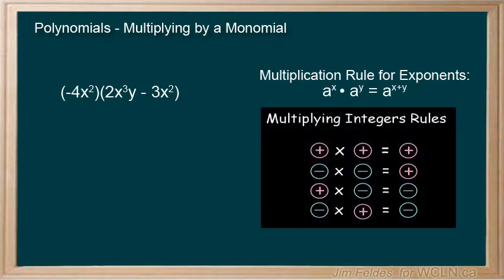For this example we multiply the coefficients with opposite signs and we get negative 8. And add the powers of the x's to get x to the fifth. The y remains unchanged. And negative 4 times negative 3 is positive 12. And the x squared times x squared is x to the fourth.